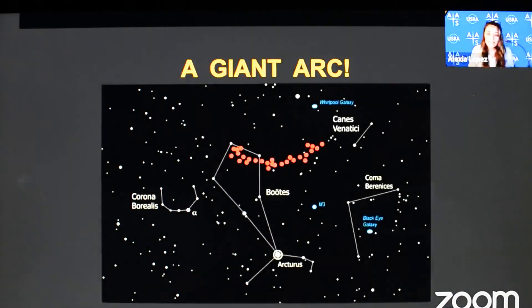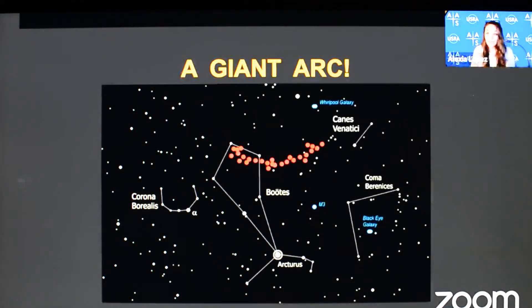If you could see the giant arc in the night sky, it would look something like this. It stems off the top of Bootes, the herdsman, or Bootes, the kite-shaped constellation, and spans 10 degrees on the sky, which is equivalent to 24 moons.